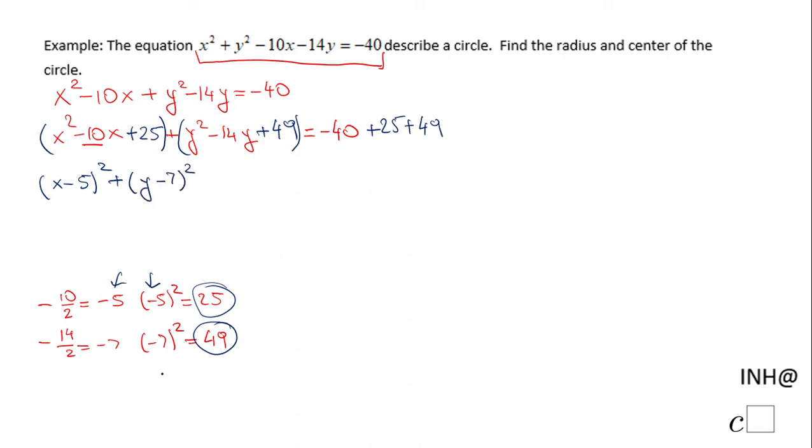Y minus 7, because we notice it is negative 7. And on the left side, we get negative 40 plus 49, that is 9, plus 25, that will be 34.